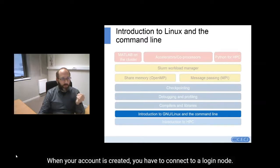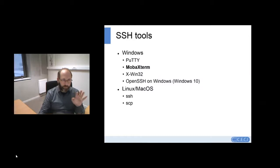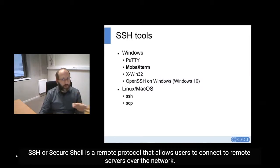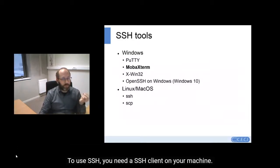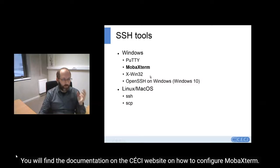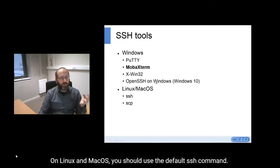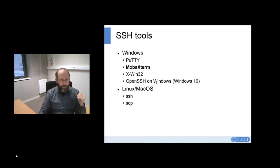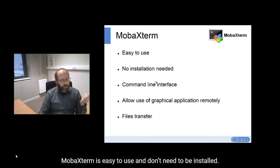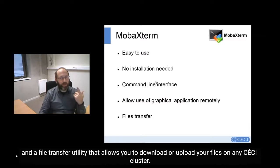When your account is created, you need to connect to the login nodes. Connection to any CECI cluster is done using the SSH protocol. SSH, or Secure Shell, is a remote protocol that allows users to connect to a remote server over the network. To use SSH, you need an SSH client on your machine. On Windows, several applications are available, but at CECI we recommend MobaXterm. On Linux and Mac OS, you should use the default SSH commands. MobaXterm is quite easy to use and doesn't need to be installed. In the same application you get a terminal to interact with the remote server, as well as a file transfer utility to download or upload files on any CECI cluster.